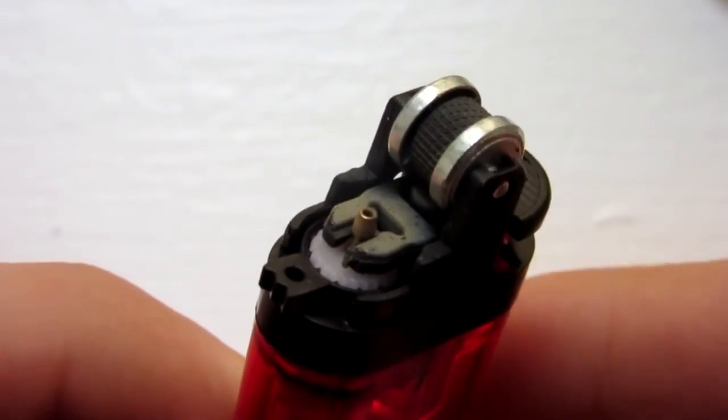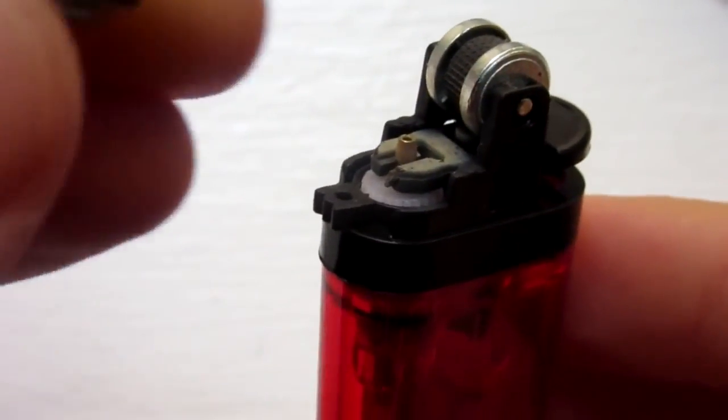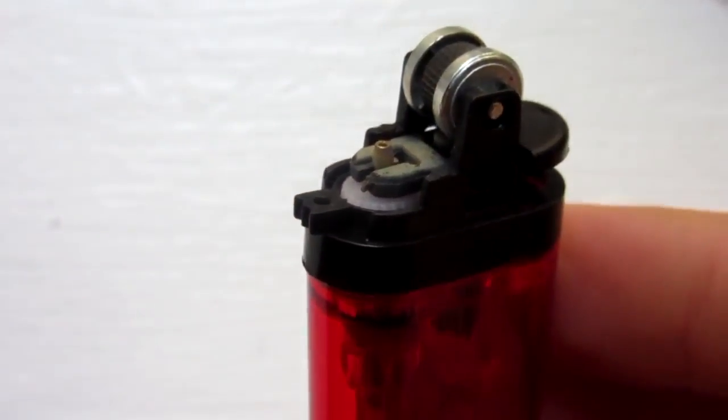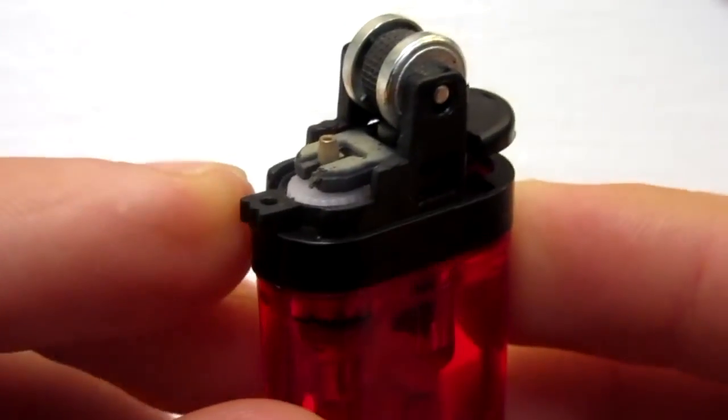So as you can see, I have removed the metal casing, and this is what it looks like right here. That just popped right off. And so now, to adjust the flame, this is the adjuster right here.